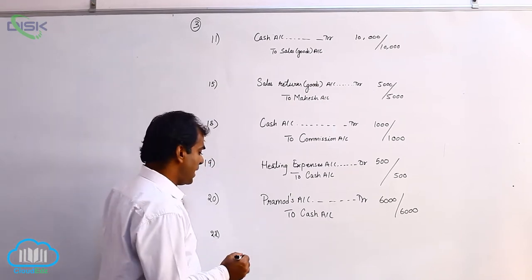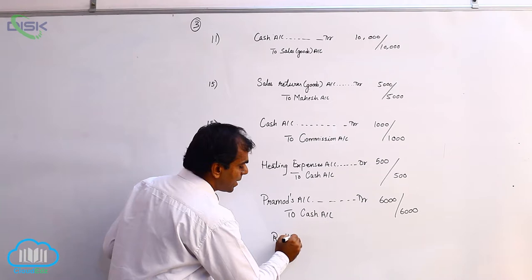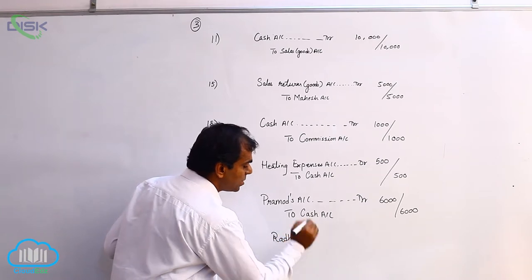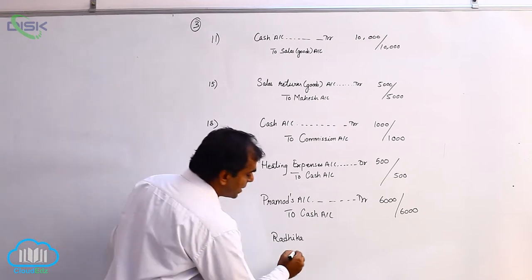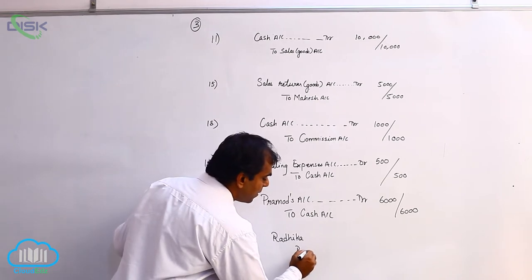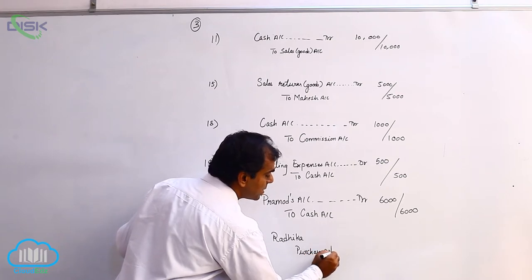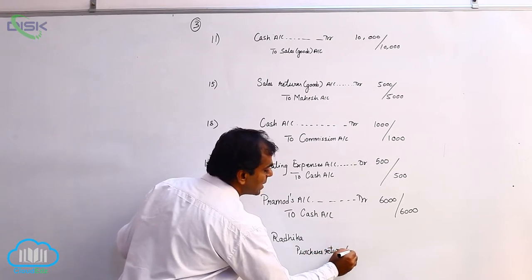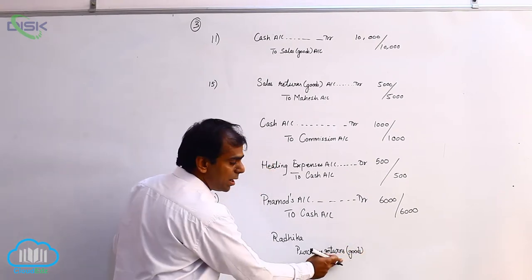The two accounts involved here are Radhika and goods. Which goods are these? Purchased goods. So we will say purchase returns. For the goods, we use the word purchase returns. So this purchase returns word is nothing but it is representing goods. Goods are real accounts.